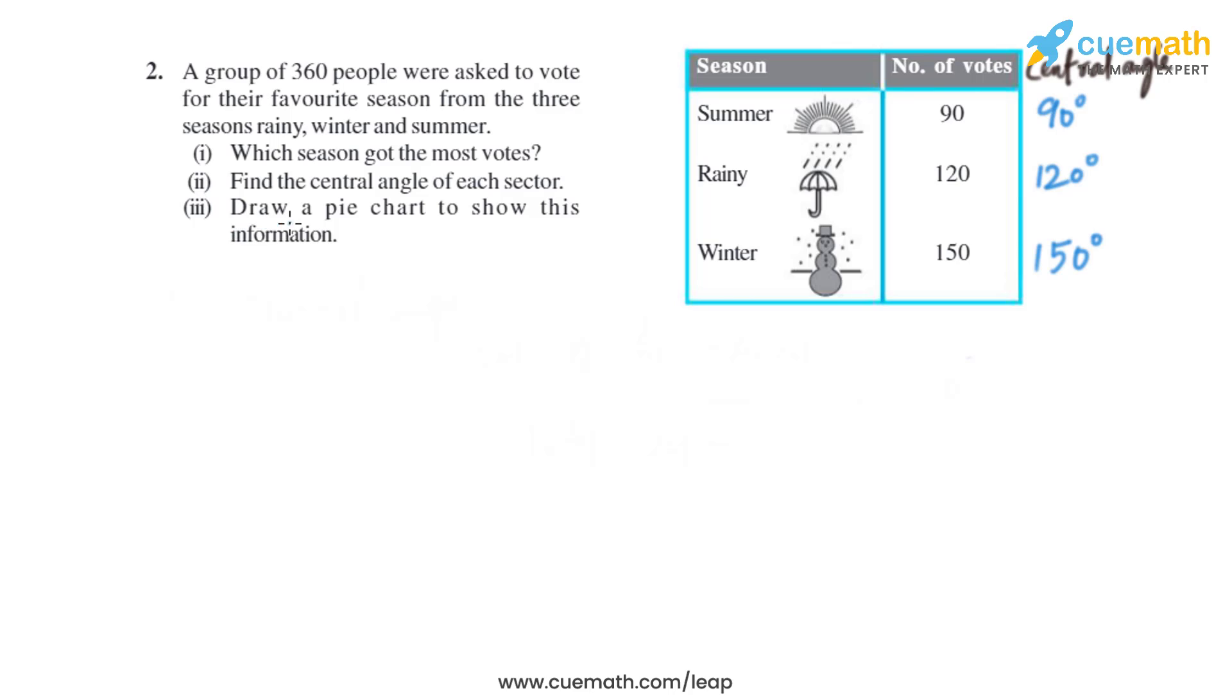Now let's move on to the third part. It says draw a pie chart to show this information. First of all, we will draw a circle with center. From this center we will draw 90 degrees using protractor. This is how we will draw for summer season, which is 90 degrees.